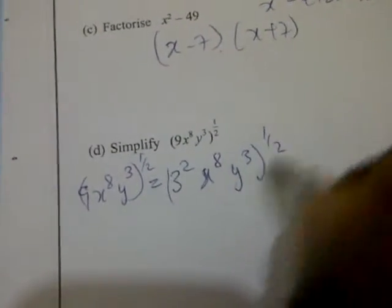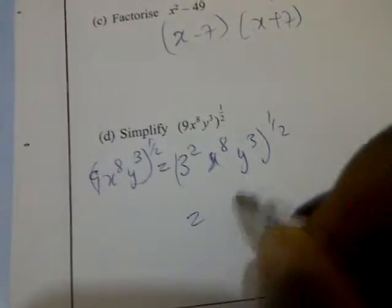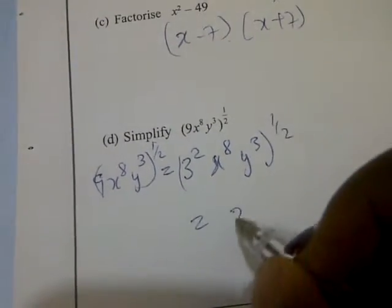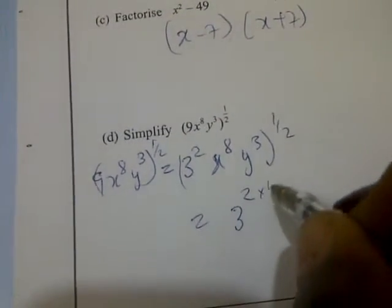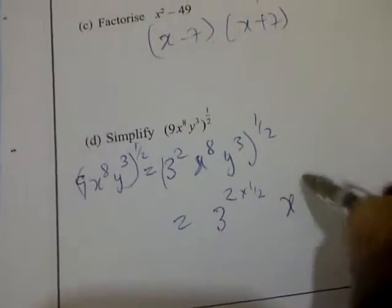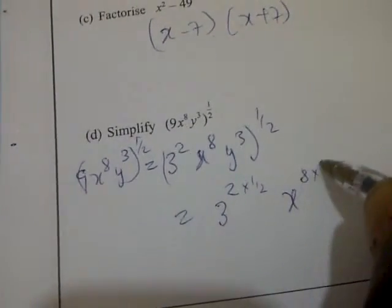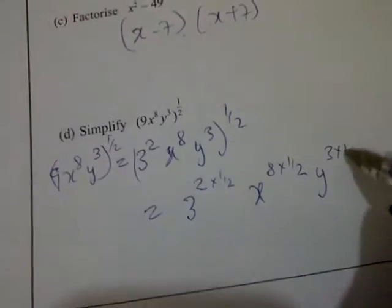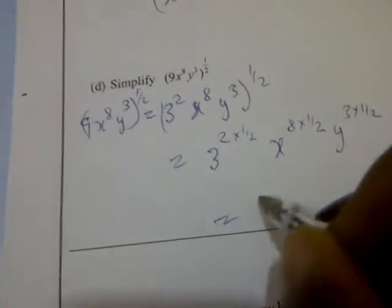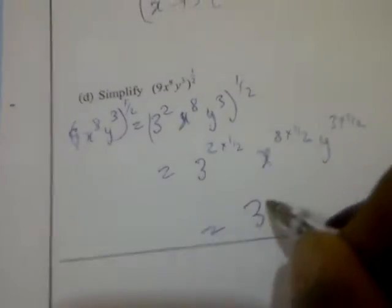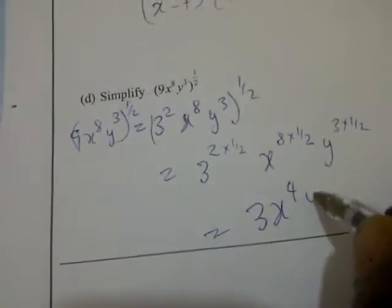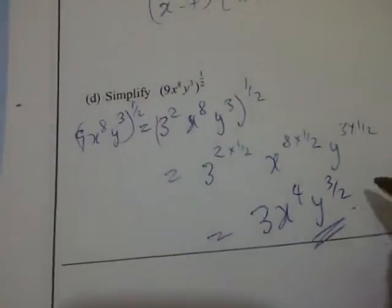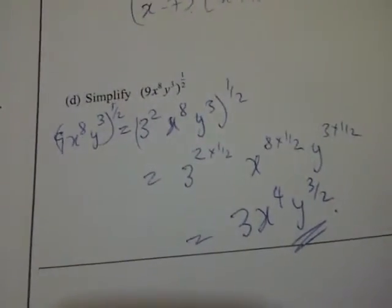That is 3^(2 × 1/2) · x^(8 × 1/2) · y^(3 × 1/2), which simplifies to 3 · x^4 · y^(3/2). That's the answer for 14d.